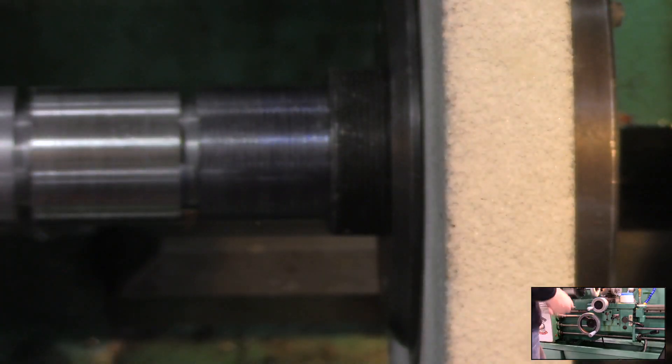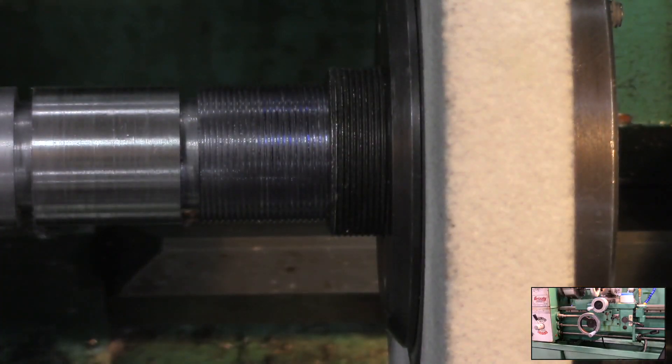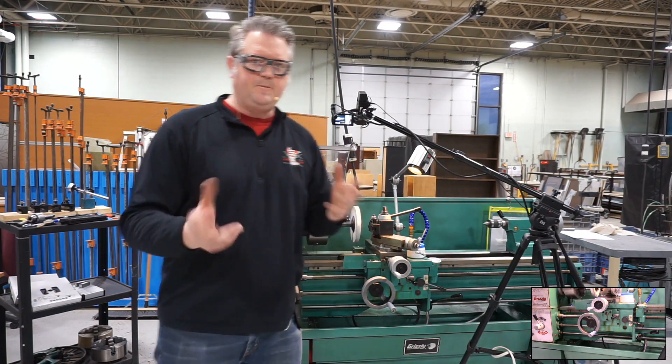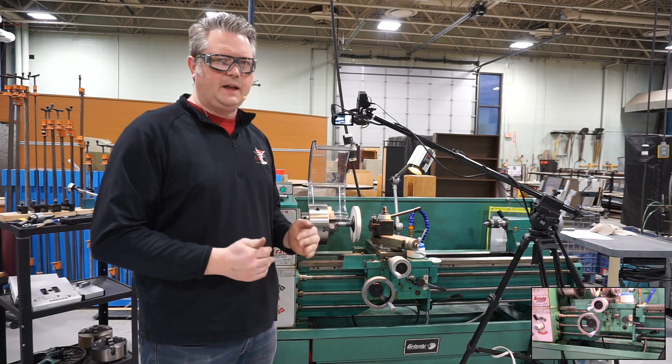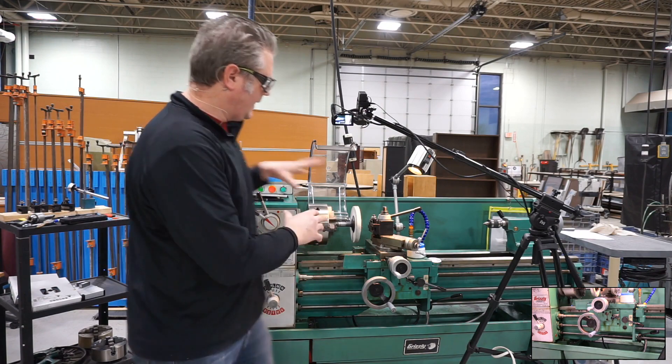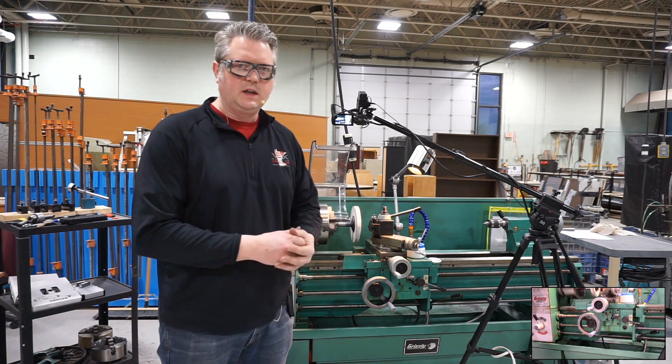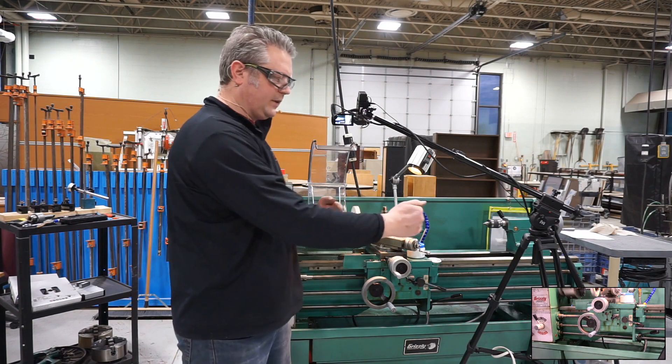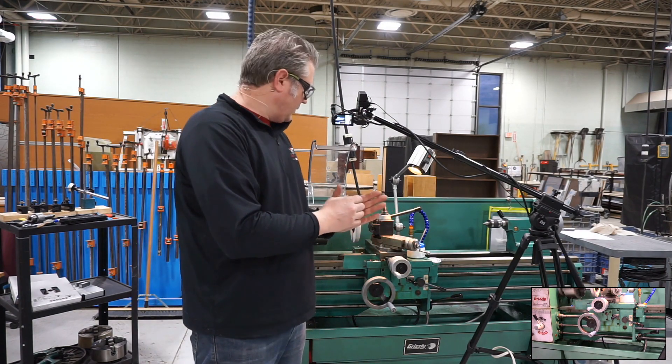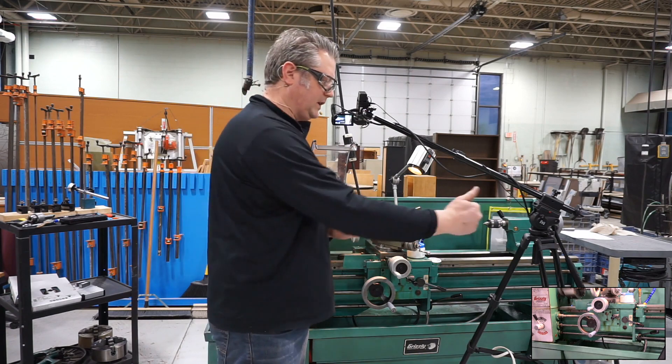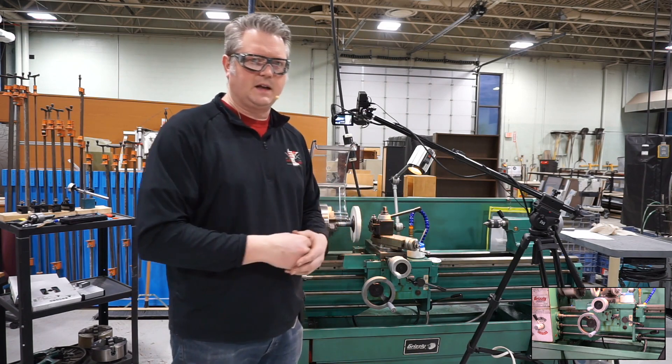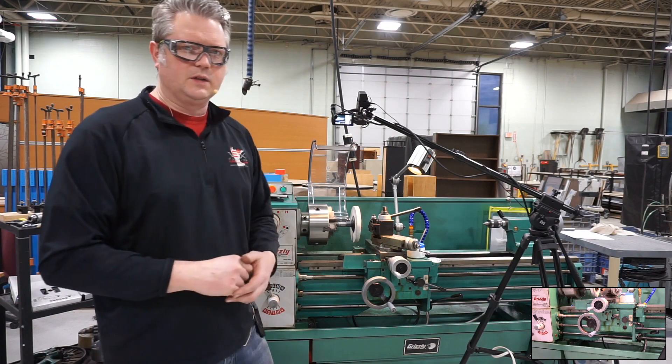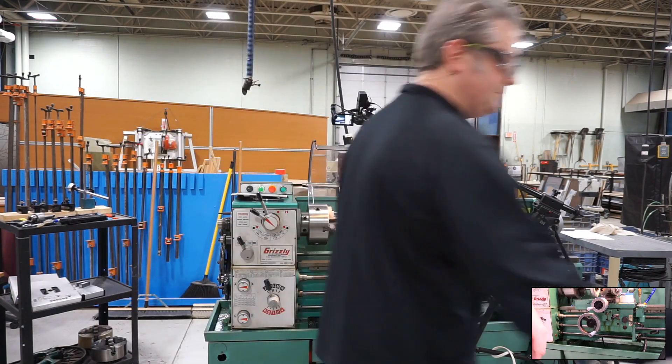Anyway, that's a wrap on this one. This has been Chasing Threads. This grizzly lathe cannot use the thread dial when cutting metric threads. We have to use this process of keeping the half nut engaged and then driving it forward and reverse. And when we go reverse, we want to back that cutter off a little bit so that we can make sure that it's not scraping along the backside. So, that's Chasing Threads, keeping the half nut engaged, cutting metric threads on this grizzly metal lathe. Catch you guys next time.